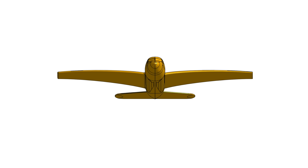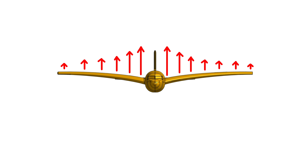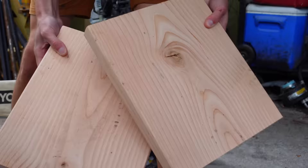A root stall makes the plane nose down flat, while a tip stall makes the plane dip to one side and potentially go into a death spiral. The other reason for the twist is that it makes the root do more of the lifting work than the tips, minimizing the strength of the wingtip vortices and increasing efficiency.